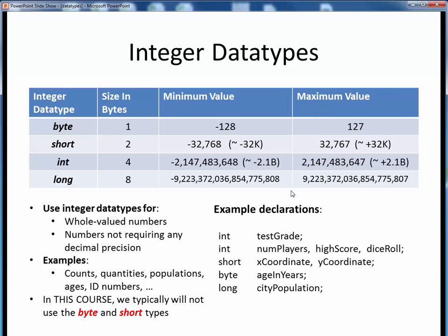Don't worry, it's not necessary to commit these values to memory. If you can remember that an int data type is about plus or minus 2.1 billion, and a short data type is about plus or minus 32,000, that's plenty sufficient for our purposes.